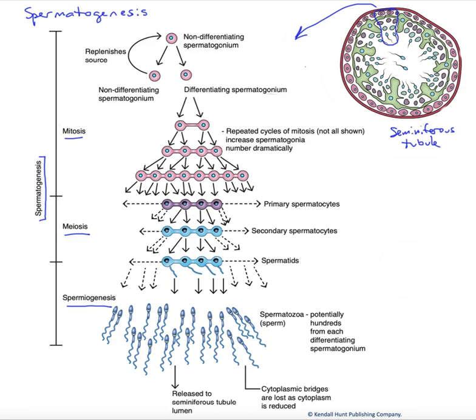Now, you'll also see we have our blood testis barrier formed by the Sertoli cells in green. And during spermatogenesis, some of our cells are going to pass across that blood testis barrier. And the Sertoli cells are acting as nurse cells, aiding this spermatogenesis process.